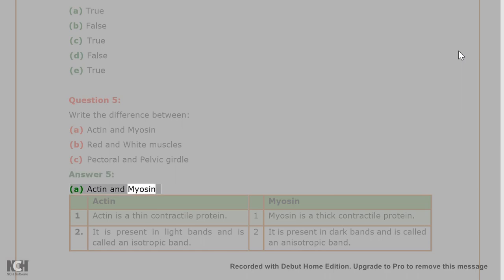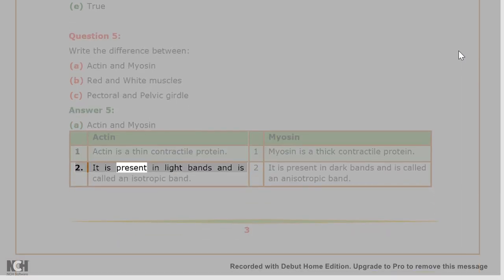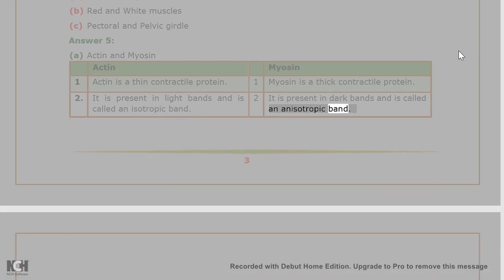Answer 5. A. Actin and Myosin. Actin: 1. Actin is a thin contractile protein. 2. It is present in light bands and is called an isotropic band. Myosin: 1. Myosin is a thick contractile protein. 2. It is present in dark bands and is called an anisotropic band.